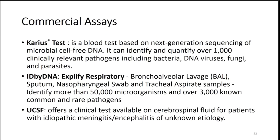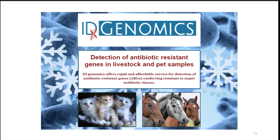There are now commercial assays offering metagenomic sequencing for clinical specimens. The Karius test uses blood samples with next-generation sequencing to identify organisms. ID by DNA uses the X3-5 respiratory assay with bronchoalveolar lavage, sputum, nasopharyngeal swabs, and tracheal aspirates. There is also a commercial assay using CSF with next-generation sequencing.